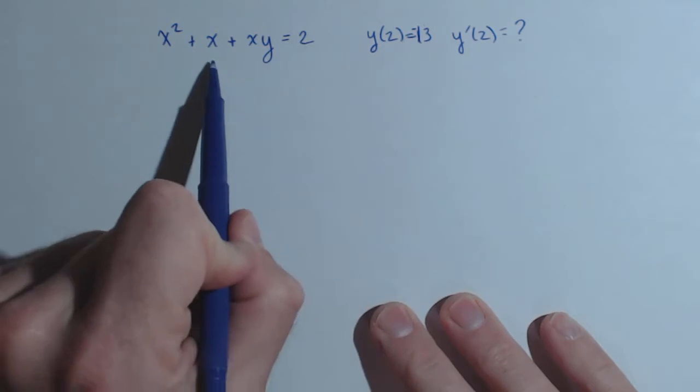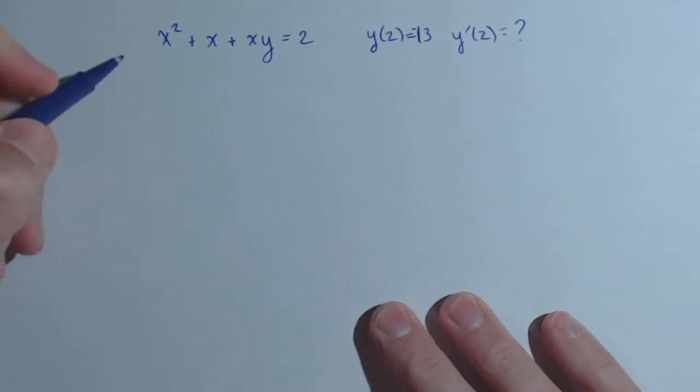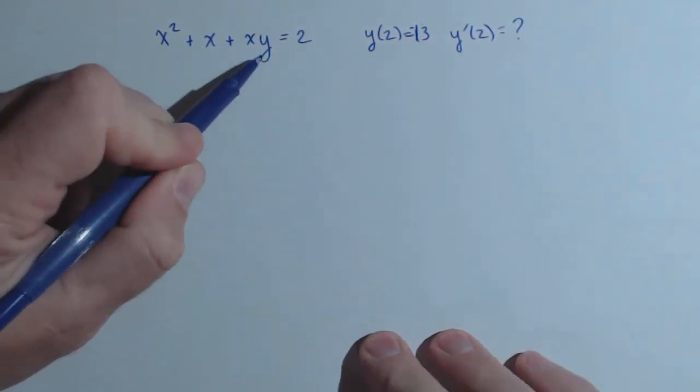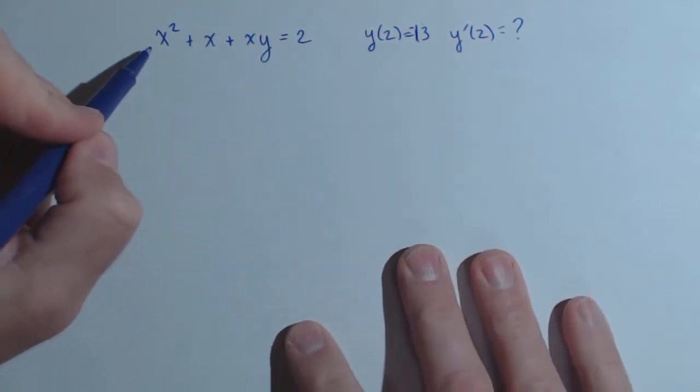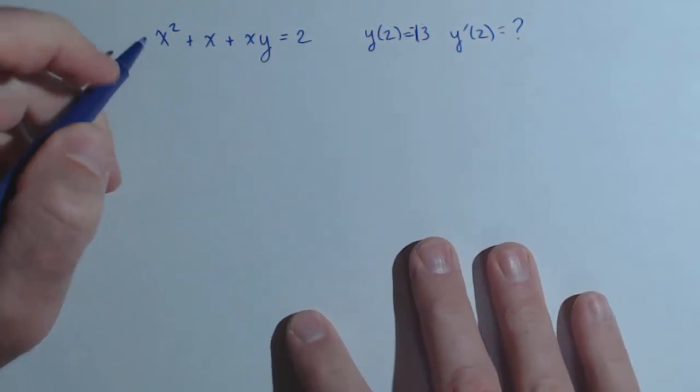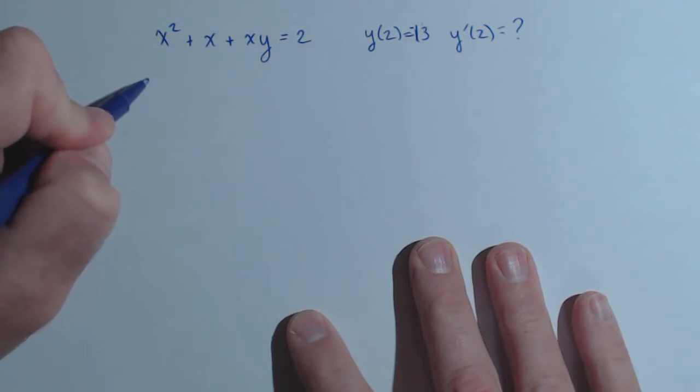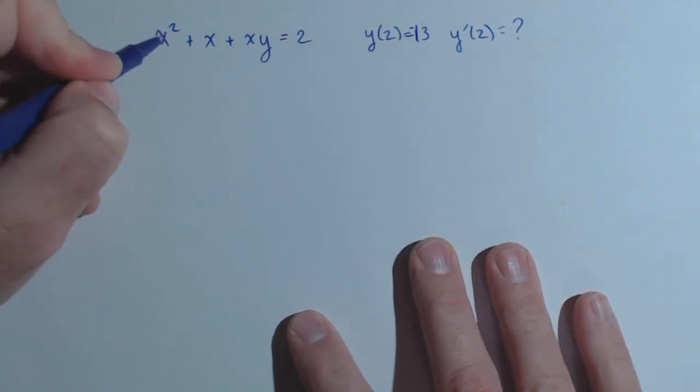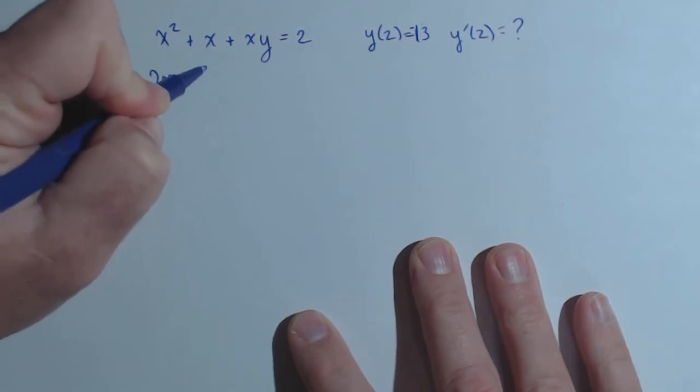So we're going to find the slope of this equation at 2 using implicit differentiation. This means we take the derivative of each part with respect to x. Any time we take the derivative of an x term, it's just our regular derivative. So the derivative of x squared is 2x, the derivative of x is 1.